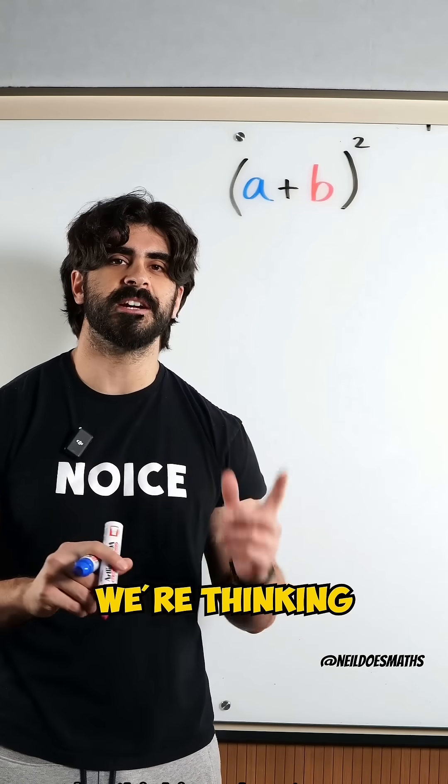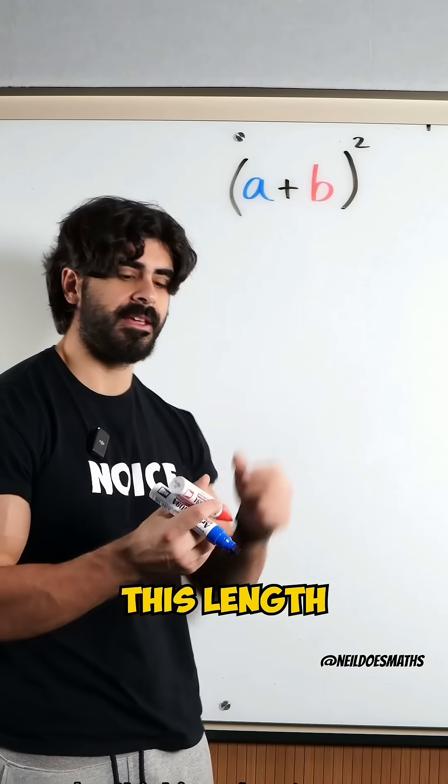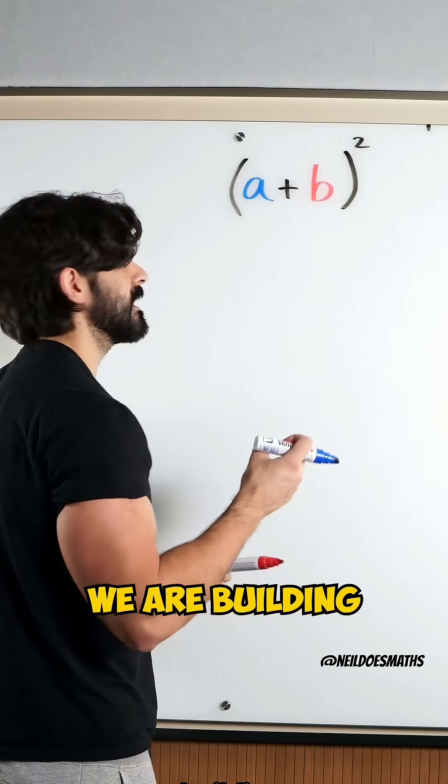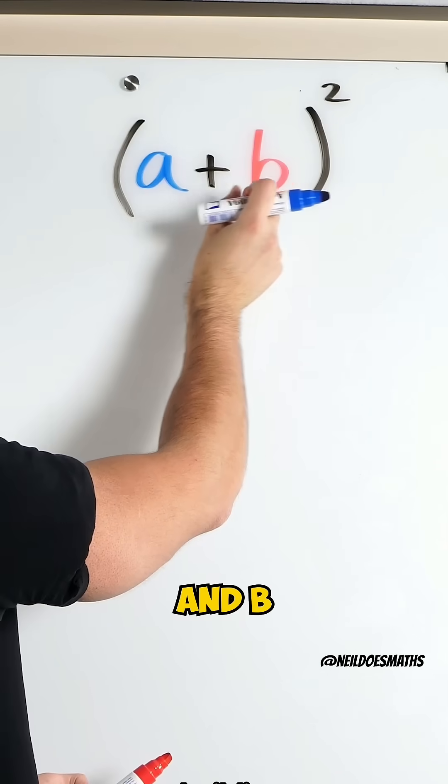To visualize this, we're thinking about a square because we're squaring this length. So, we are building a square whose side lengths are A and B.